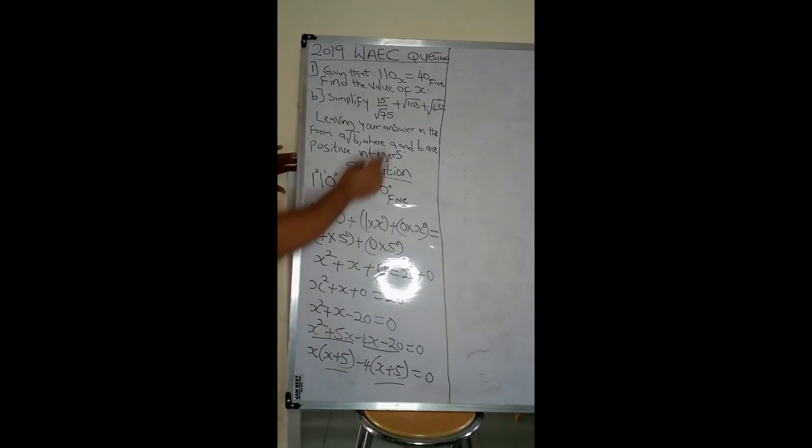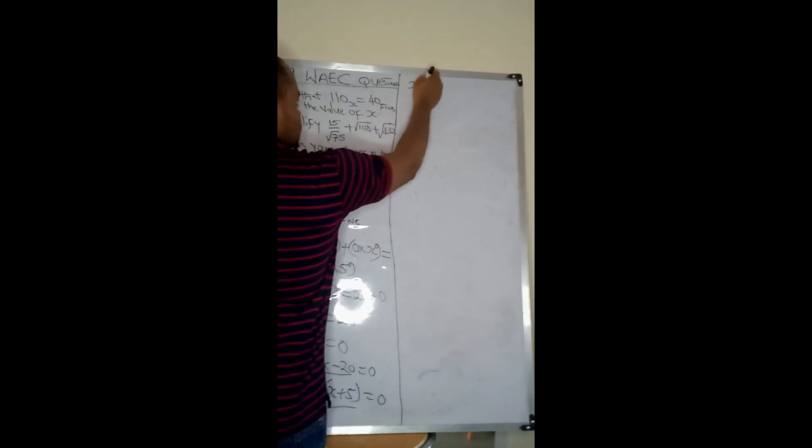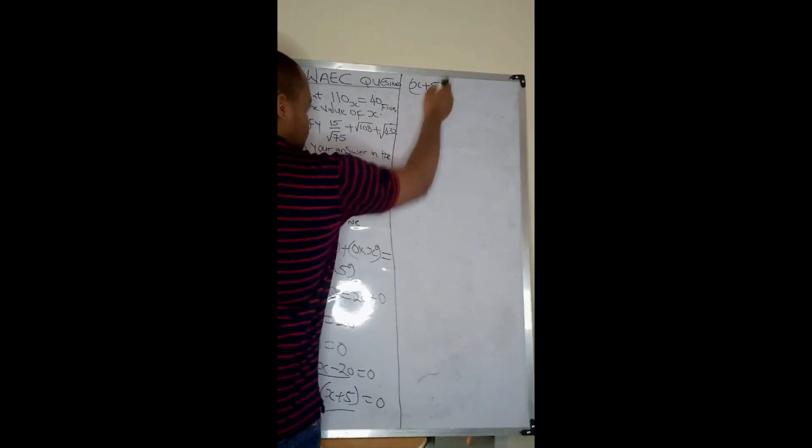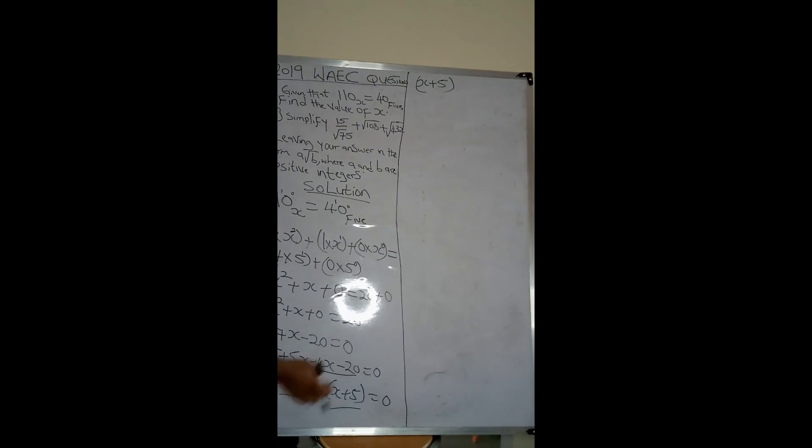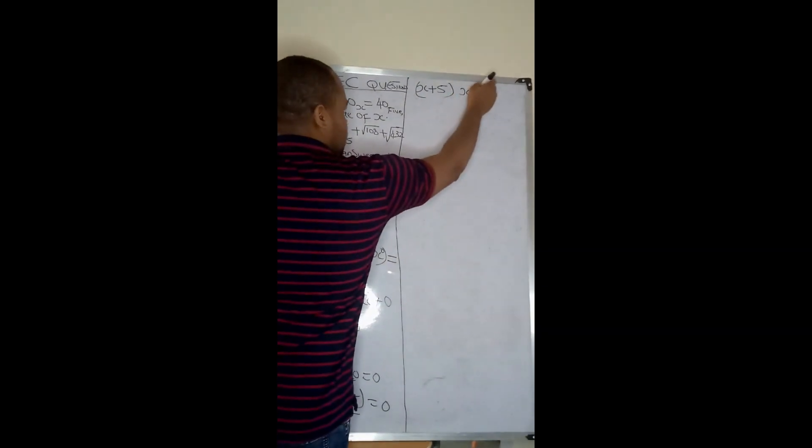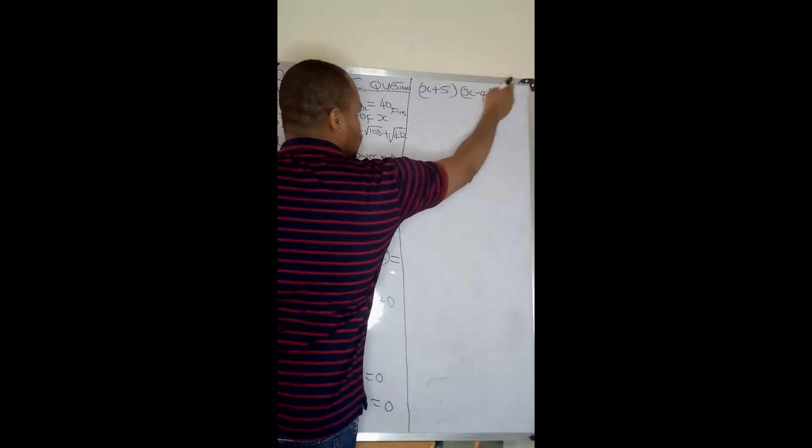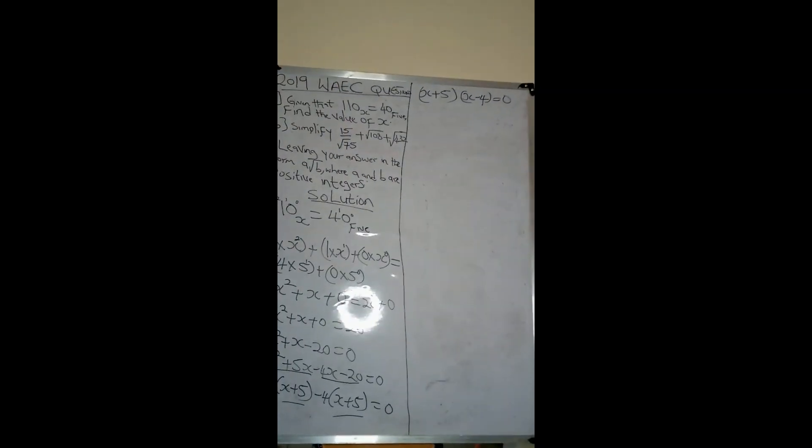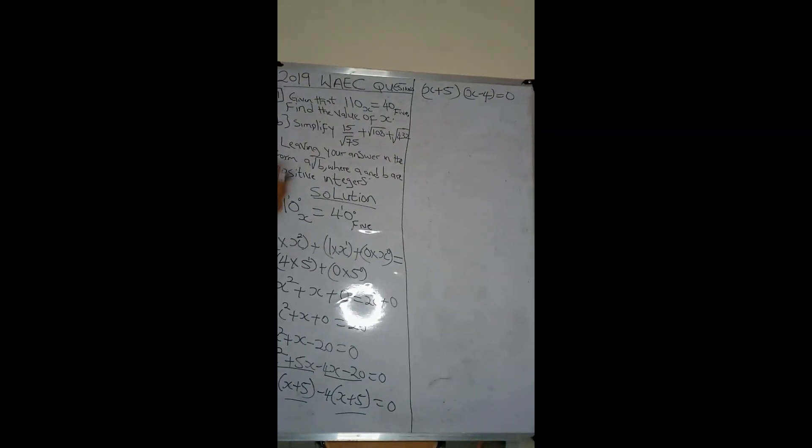You can see I have x plus 5 here, I have x plus 5 here. I'll pick just one of them. I'll pick my x plus 5, then the next thing I pick x minus 4. x minus 4 equal to 0.